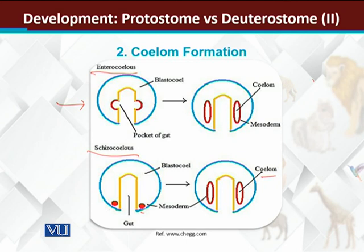If the coelom is forming due to splitting of mesodermal cells, it is a schizocoelous pattern. If the coelom is forming due to outpouching of the archenteron, it is an enterocoelous pattern.